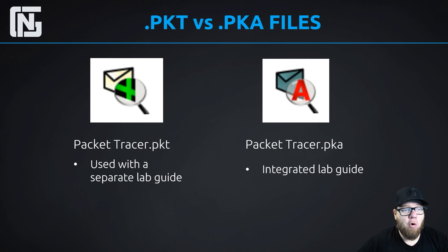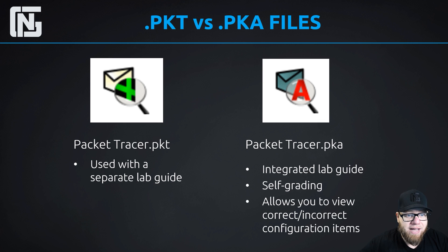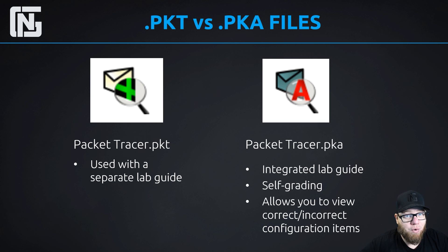When you open up a PKA file, it opens up two windows: the normal Packet Tracer window, and a second window that contains the instructions or the lab guide itself. PKA files are also self-grading and self-checking — they follow your progress as you're configuring the required items and keep track of them. So if you finish a lab and something's not working and it's late at night with no one to ask, that PKA file will allow you to look at the required assessment items to see if any were misconfigured or not configured at all.